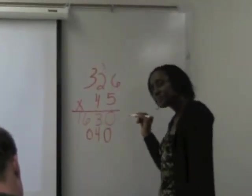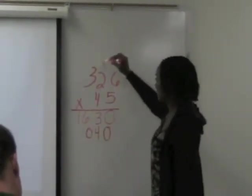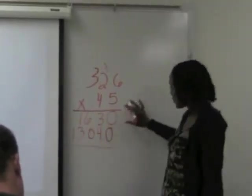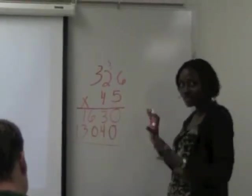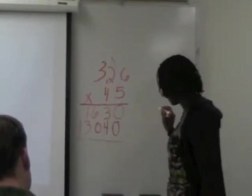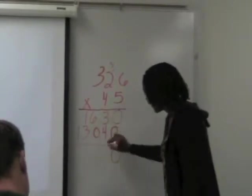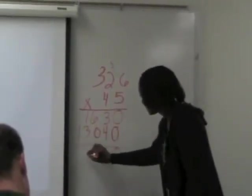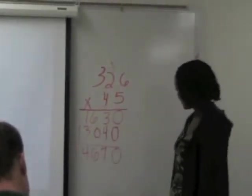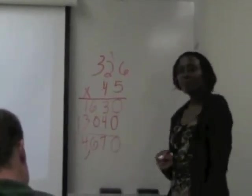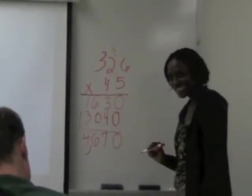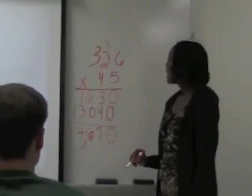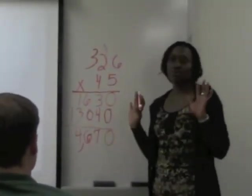Four times 2 is 8, plus 2 is 10. Four times 3 is 12, plus 1 is 13. We start adding from the right side, just like two-by-two digit multiplication — and just in case we have to carry, we make sure we add from the right side. Our answer is — Trish? 14,670. Yes, that is correct. This is straight traditional multiplication.